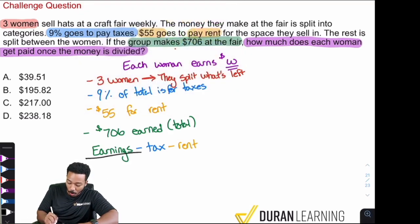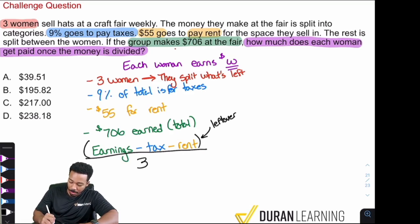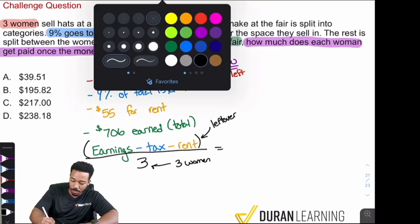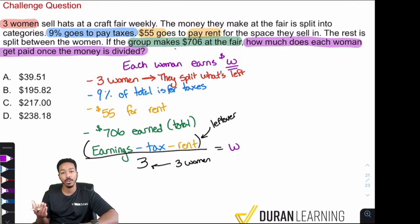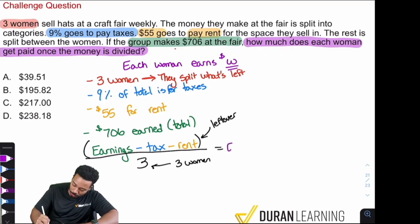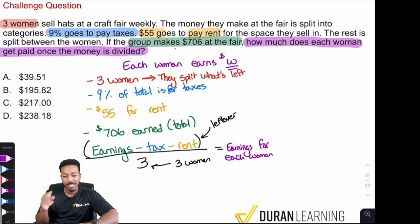Because again, if you have that grand total, whatever it was, and then you take away the tax that they need to pay, and then you take away the rent that they need to pay for the space, boom, whatever's left is what the women earned. And once they have that, boom, divide by three, and they can split it amongst themselves and they're good. And so exactly what I said there, their earnings minus the tax minus the rent. After we have all that, we're going to divide all of that by three. So again, do this first, because again, what this will give you, all of this, what it'll give you will be the leftover. All of this. And then you're dividing by three, because again, it's the three women.